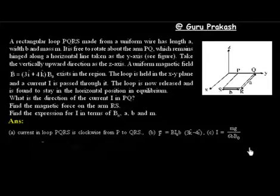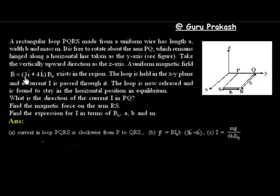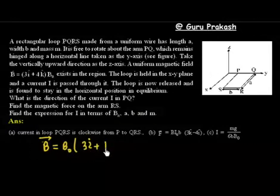This problem involves a rectangular loop PQRS kept in the XZ plane. The length of the loop is A and the width is B. There exists a magnetic field in this region given by B = B₀(3î + 4k̂). So the magnetic field in vector form is B₀(3î + 4k̂).